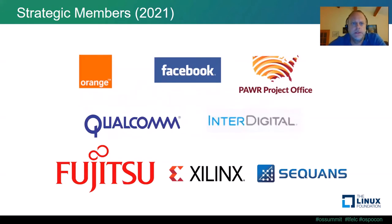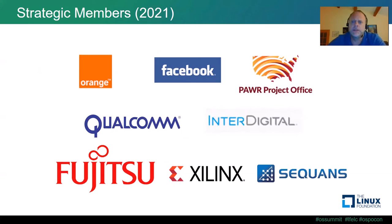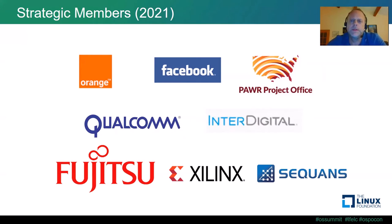These are the strategic members in 2021. You can see it ranges from operators like Orange to equipment vendors like Fujitsu, semiconductor vendors like Qualcomm, Sequans, or Xilinx, intellectual property and research companies like InterDigital, and also institutional partners like the POWDER Project Office, which manages a lot of innovative research projects and research platforms in the United States.